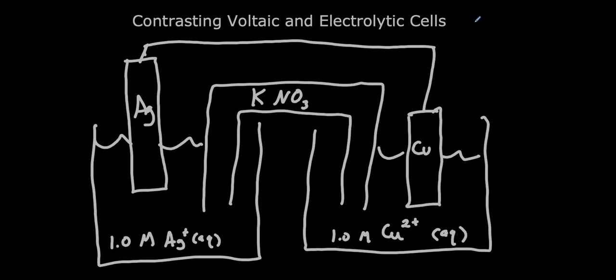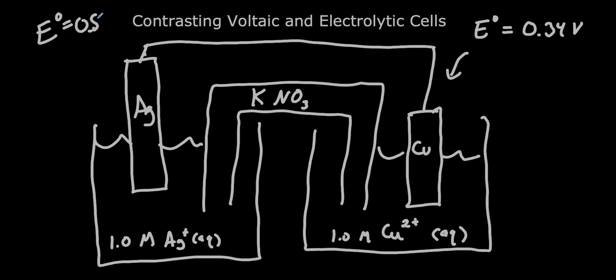If we look at the copper, the standard reduction potential for copper is 0.34 volts and the standard reduction potential for silver is 0.80 volts. So we can see that for a voltaic cell — one where the forward reaction is spontaneous — given that we're at one molar concentrations for both our ions, the standard cell potential E cell is going to be equal to 0.46 volts. Because we're under standard conditions, q equals 1, and E cell equals 0.46 volts. This is a cell that will just run of its own accord.